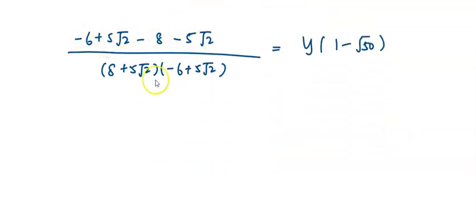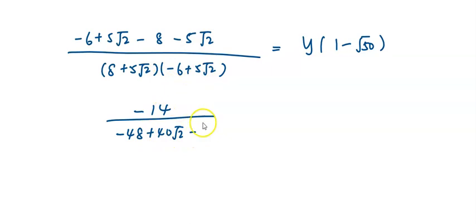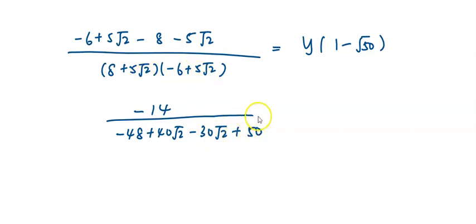Then simplify the numerator: I got negative 14. Then I have 8 plus 5√2 multiplied by negative 6 plus 5√2, giving negative 48 plus 40√2 minus 30√2, and positive 5 multiplied by 2 gives 10. Combined: negative 48 plus 43√2 minus 3√2 plus 5√2.